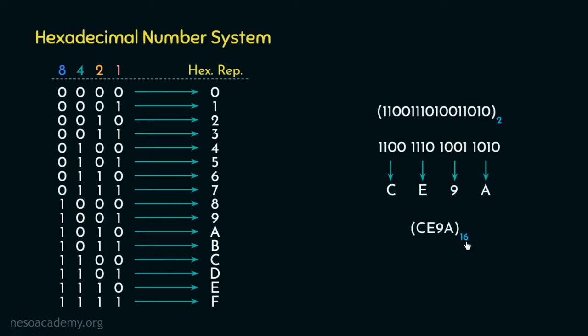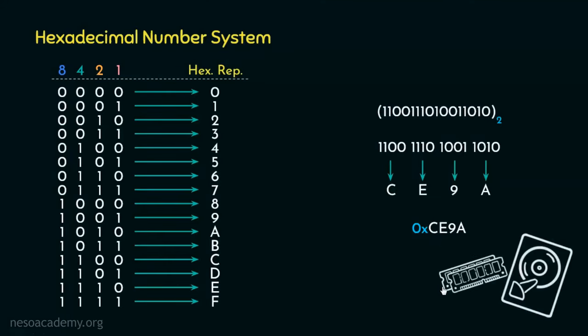Hexadecimal numbers are also represented by adding a prefix 0x in front of the number, so this value can also be stated as 0xCE9A. Since we can represent very long binary bit streams using fewer hexadecimal digits, hexadecimal numbers are often used to represent addresses in memory devices.